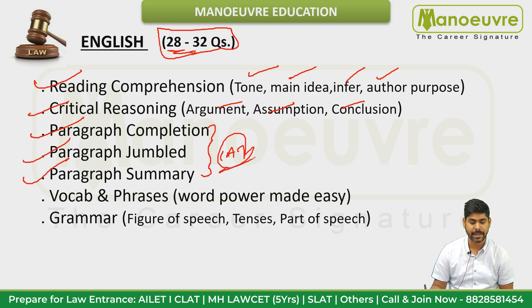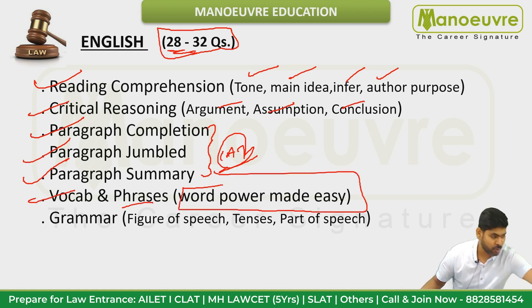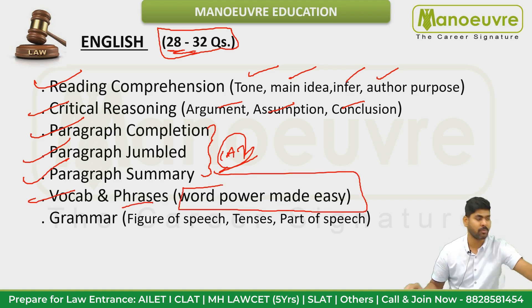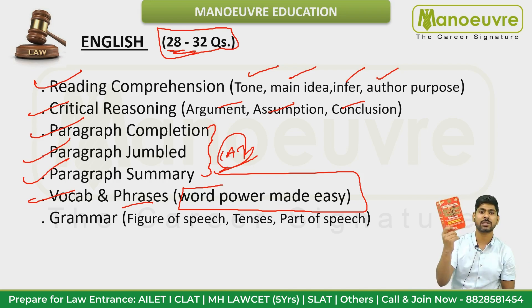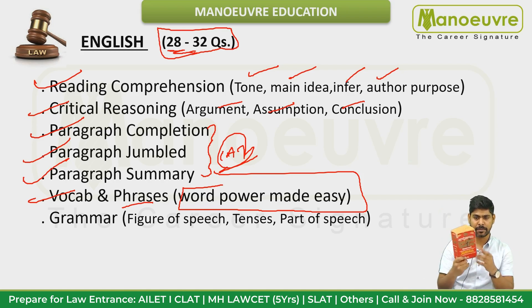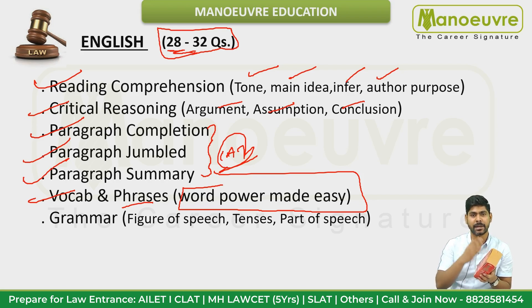The CLAT exam is at a CAT level. For vocabulary, the recommended book is 'Word Power Made Easy' — it's the red color book, available to order on Amazon. The best part is the word list at the back that you can use for revision. You can complete this book in three months.